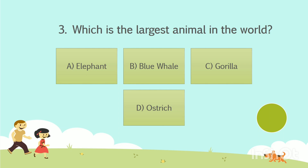Question No. 3: Which is the largest animal in the world? Option A: Elephant. Option B: Blue Whale. Option C: Gorilla. Option D: Ostrich. Your time starts now. The answer is Option B: Blue Whale.